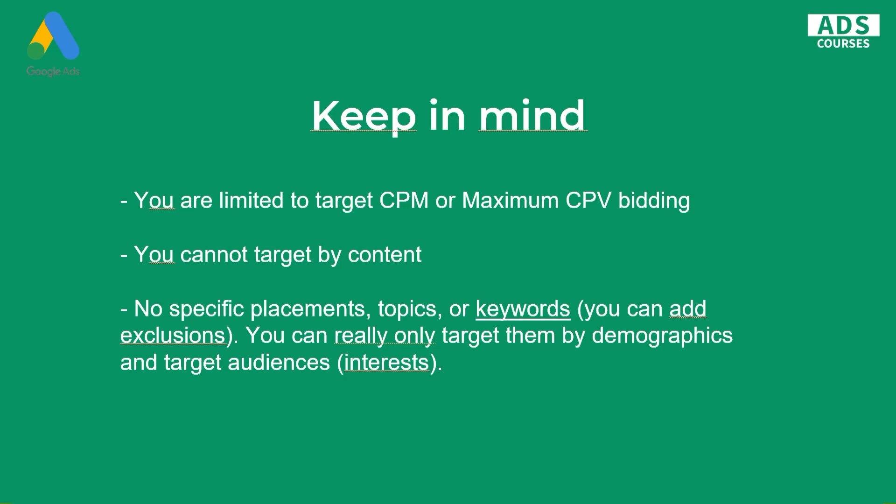First of all, you are limited to target CPM or maximum cost per view bidding. You can't use CPC, you can't use conversion-related bidding strategies — you can only use CPM or cost per view. Google strongly recommends CPM, but it's your choice. If you want to expand the reach, go with CPM. If you want to control cost per view, go with CPV.